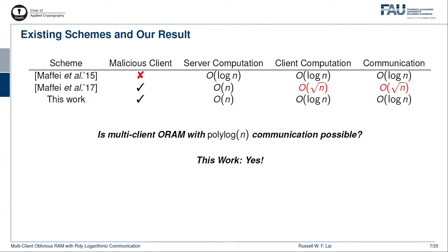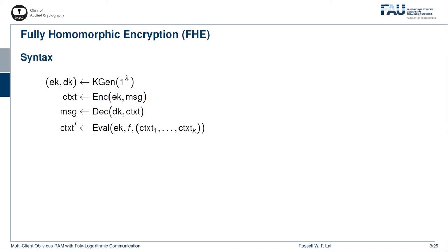Our scheme is based on a new technique which we call the cross-key evaluation of fully homomorphic encryption ciphertexts. Let me quickly recall the syntax of FHE. There are the usual key generation, encryption, and decryption algorithms, as in a public key encryption scheme, and also a homomorphic evaluation algorithm. This evaluation algorithm homomorphically evaluates the function f, chosen from some admissible family, over a tuple of ciphertexts, and produces a new ciphertext.